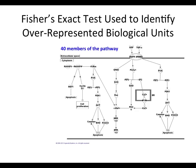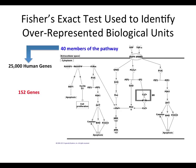How does this work? I'm going to explain pathway analysis in one slide. The statistics behind all of this is incredibly easy. Say I know that a particular pathway is important in lung cancer, and it's made of 40 members. I want to determine whether this pathway is playing a role in my 152 genes correlated to JUP. Here is the critical part — there's a limited amount of genes we can pick from. These 40 members are part of approximately 25,000 human genes in the human genome.